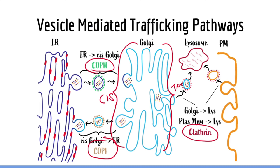Lastly, let's talk about non-vesicular mediated trafficking. As we said before, there are two general pathways of protein trafficking which differ based on which ribosomes the proteins are made in. Proteins that are made in cytosolic or free-floating ribosomes typically stay in the cell. These are usually proteins belonging to organelles or structures such as the nucleus, peroxisome, mitochondria, or cytosol. These proteins never enter vesicles and instead depend on special amino acid sequences that target the protein to its intended destination.